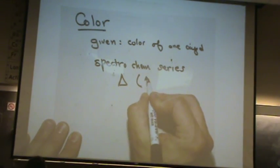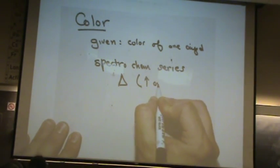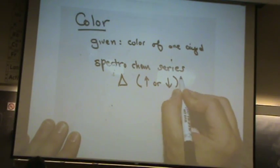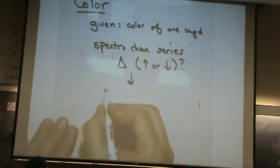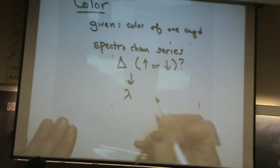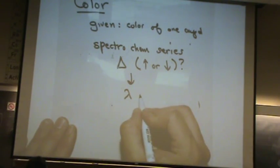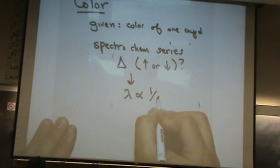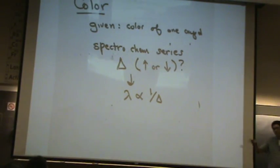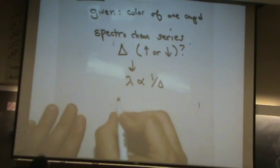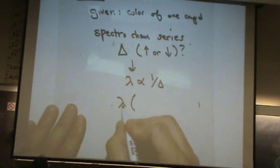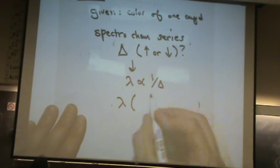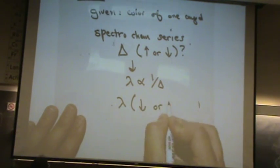You want to ask yourself: does delta increase or decrease? Then from there you look at lambda. Remember, lambda is inversely proportional to delta, so if one goes up, the other goes down. If delta goes up or down, you want to know if lambda goes down or up correspondingly.